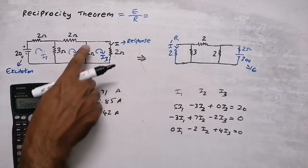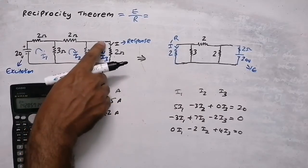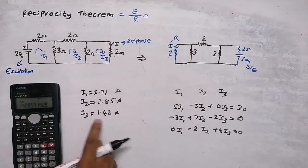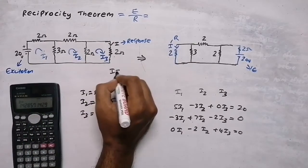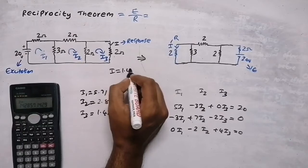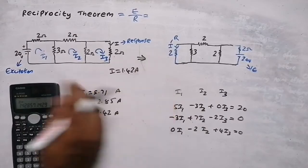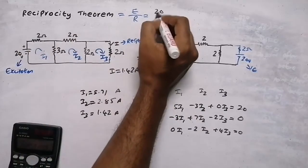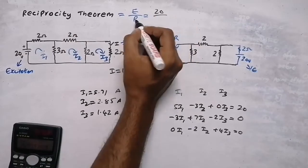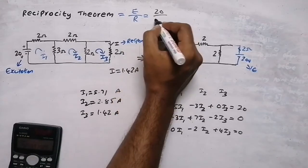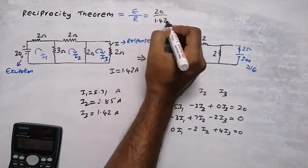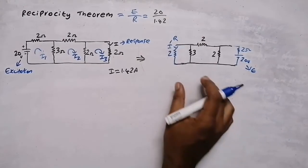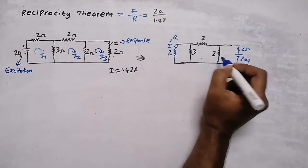I need to find i3 because i3 is the current flowing through this resistor. So the value is 1.42A. The excitation is 20V and the response is 1.42A. Now I'm going to find the current in the second circuit using mesh analysis.